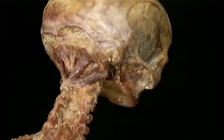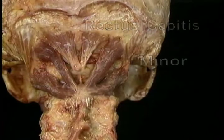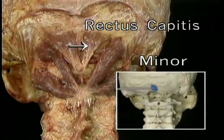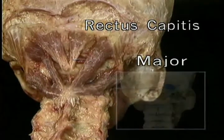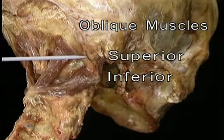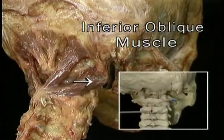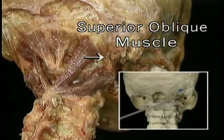Now we'll look at the principal muscles of the neck, building up our picture from the inside to the outside. We'll start with four short muscles on the underside of the occiput: the two oblique muscles and the two rectus muscles, collectively called the suboccipital muscles. Here are the two rectus capitis muscles — minor and major. Rectus capitis minor goes from the middle of the posterior arch of the atlas to the occiput. Rectus capitis major goes from the spinous process of the atlas to the occiput. Here are the two obliquus capitis muscles — the inferior and the much smaller superior. The inferior oblique goes from the spine of the axis to the transverse process of the atlas; the superior oblique goes from the transverse process of the atlas to the occiput.